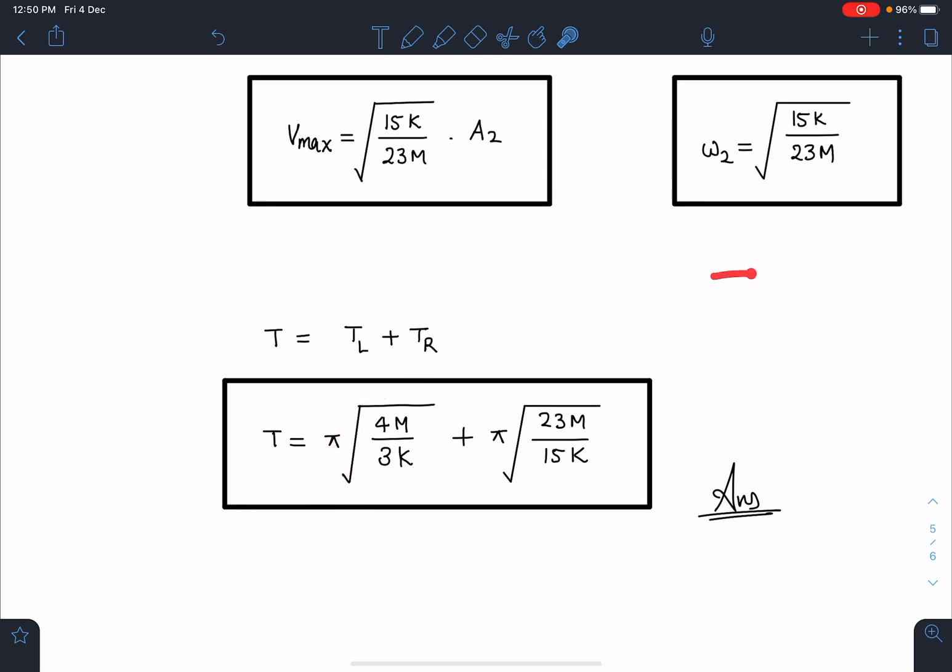Similarly, I can write for the right part, the time from here to here is half of the complete SHM, which is going to be pi times √(23M/15K). So this is going to be the time period of the system.